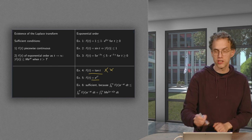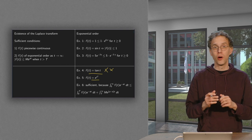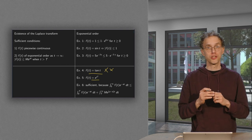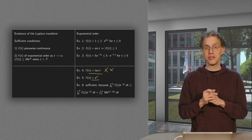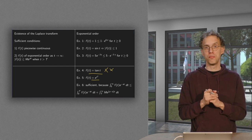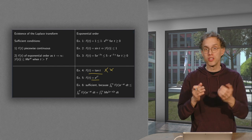And a bit more subtle, maybe. f of t equals e to the power t squared. Well, whatever you do, at a certain point, your t squared will always be bigger than a times t. No matter how big you pick your a, t squared will always win in the end.